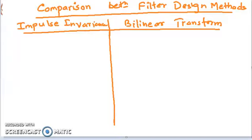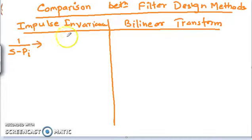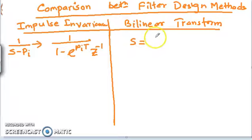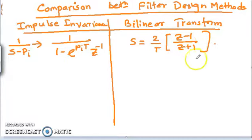In the impulse invariance method, the poles are mapped such that if a pole is 1/(s - p_i), it is represented in the form 1 minus e^(p_i * T) * z^(-1), where T is the sampling time period. In the bilinear transformation, the poles are represented using the substitution s = (2/T) * (z - 1)/(z + 1).